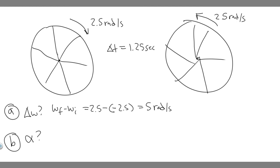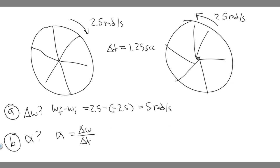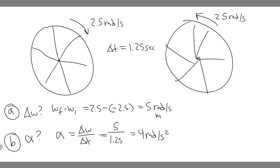Now let's find alpha, the tire's average angular acceleration. Angular acceleration is the change in omega over the change in time — just like linear acceleration is change in velocity over change in time. The change in omega is 5, and the time interval is 1.25 seconds. So 5 divided by 1.25 equals 4. The answer to B is 4 radians per second squared, and the answer to A is 5 radians per second. Hopefully you found this useful.